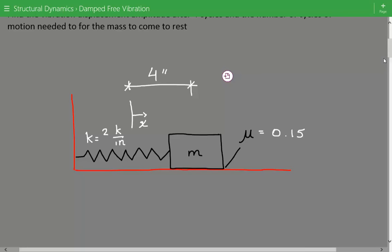So here's our figure. This example covers Coulomb or dry friction damping because that's the type of damping we have due to the friction between the mass and the surface that it sits on.